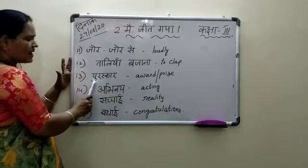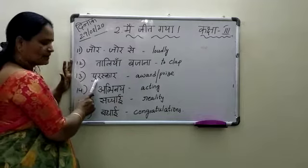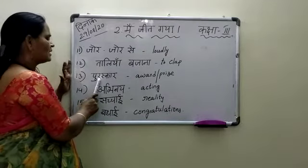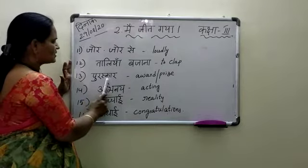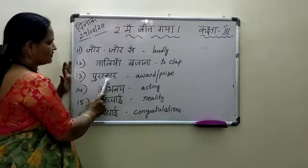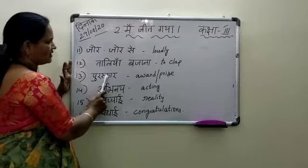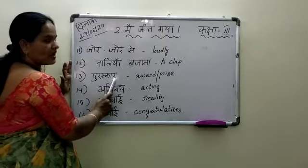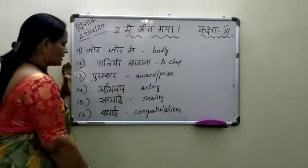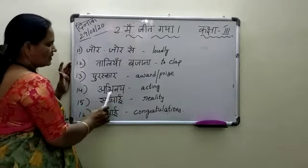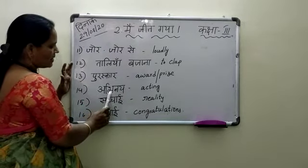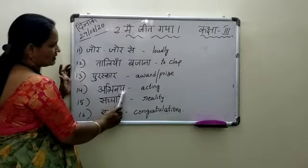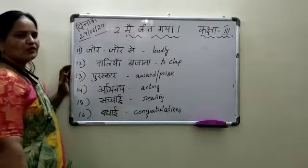Next: Puraskaar — chotiyaan matra, short sound. Puraskaar — kakiyaan matra darsai. Puraskaar means award or prize. Next: Abhinaya — a-ba ki chotiya matra jonesse, Abhinaya. Abhinaya means acting.